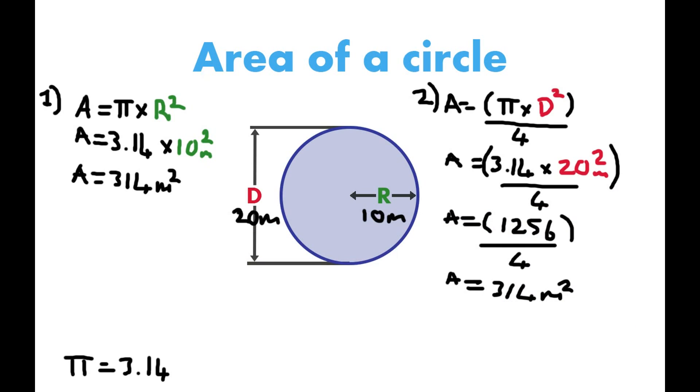There you go. So there you can see there's two methods to calculating the area of a circle, depending on if you know the dimensions of the diameter or the radius. Both will give you the same result, but they'll be using different methods.